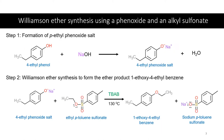In today's reaction, we are going to use a phenoxide — 4-ethylphenoxide — reacting with an alkyl sulfonate, ethyl p-toluenesulfonate, in order to prepare an asymmetric ether product by the Williamson ether synthesis reaction.